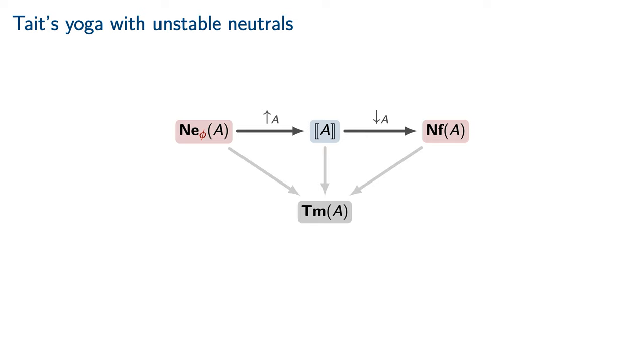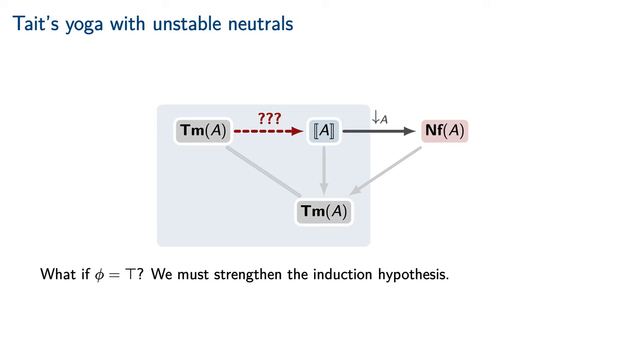the reification map must not take the true boolean to the normal form of the false boolean. We cannot directly apply Tait's yoga in the context of destabilization. Considering the case of a totally unstable neutral, the reflection map would then have to construct a computability datum out of thin air for an arbitrary equivalence class of typed terms. Doing so is exactly as strong as the normalization result that we are attempting to prove. Therefore,